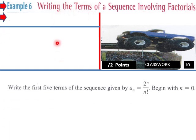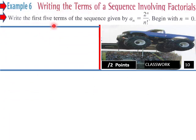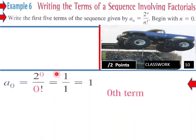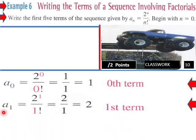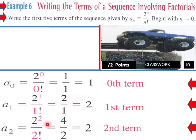Writing the terms of a sequence involving factorials: write the first five terms of the sequence given by aₙ = 2ⁿ / n!, beginning with n = 0. So a₀ = 2⁰ / 0! = 1/1 = 1. Then a₁ = 2¹ / 1! = 2. And a₂ = 2² / 2! = 4/2 = 2.